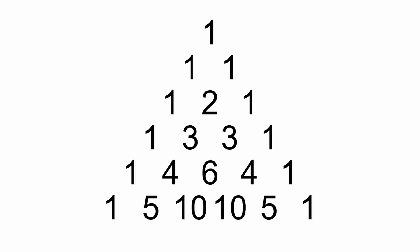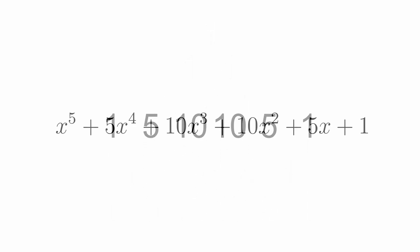The combinatorics work just right to give n choose k as the coefficient of x to the k, so you could also follow along a row on Pascal's triangle to get the coefficients as you go across.